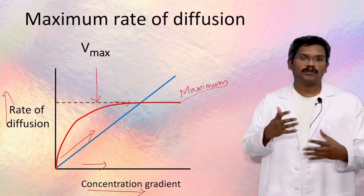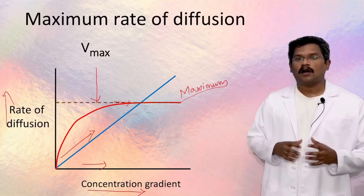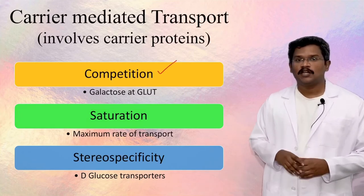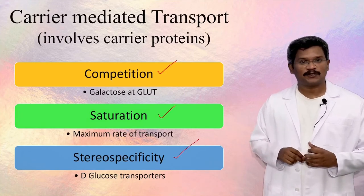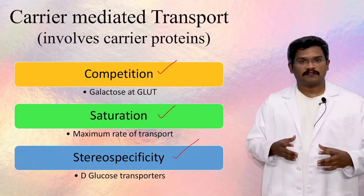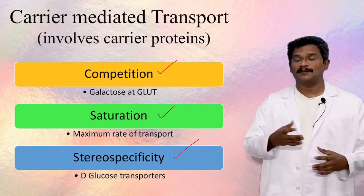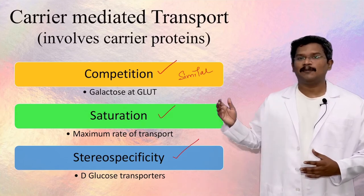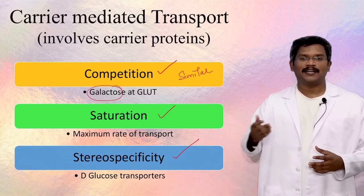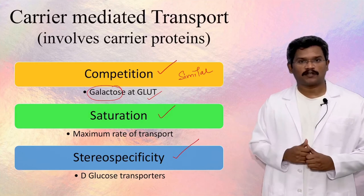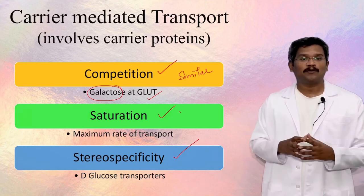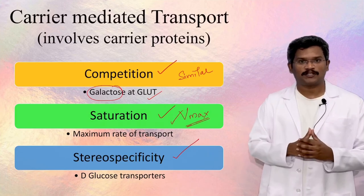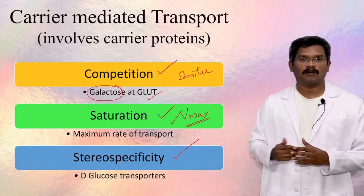The proteins are said to be saturated, beyond which there cannot be any further increase in the rate of transport unless new transporters are added. All carrier-mediated diffusion will show three common properties: competition, saturation, and stereo specificity. Competition refers to the fact that the presence of a similar molecule will compete for the binding site in the carrier protein — for example, galactose getting transported using a glucose transporter. All carrier proteins will have a maximum rate at which they can transport solutes, which is called saturation, or Vmax.